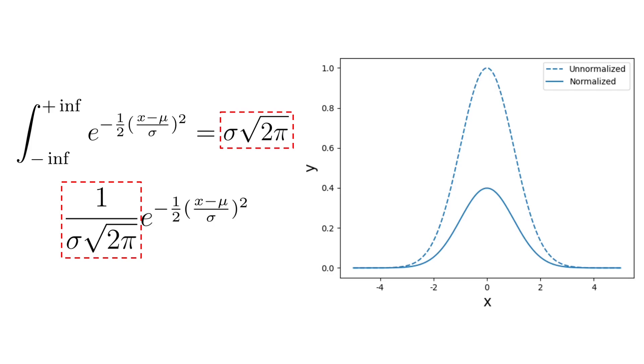Anyway, the last building block is to normalize our equation and make it a probability distribution. Because when you integrate from minus infinity to plus infinity, we don't obtain 1, but sigma multiplied by the square root of pi. So we have to divide by this term to obtain a probability distribution. And thus, we have finally obtained a normal distribution.